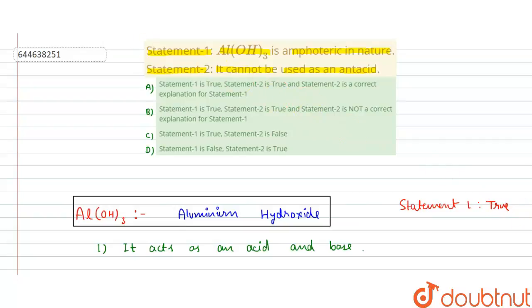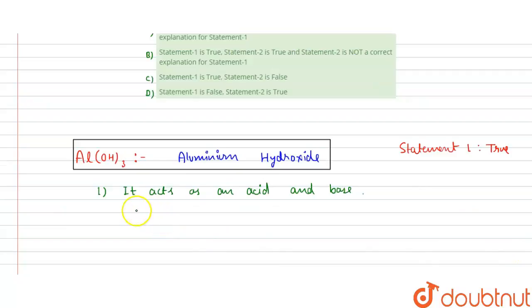Now statement 2 says it cannot be used as an antacid. No, this is the wrong answer because it can be used as an antacid. It can be used as an antacid. So these two are the properties of this, so that means statement 2 is false.